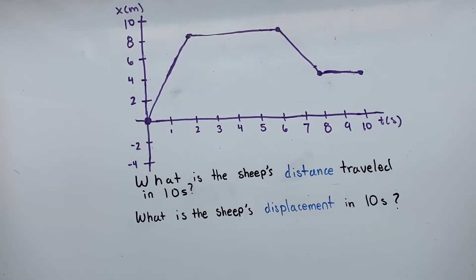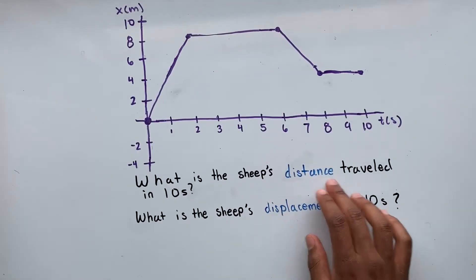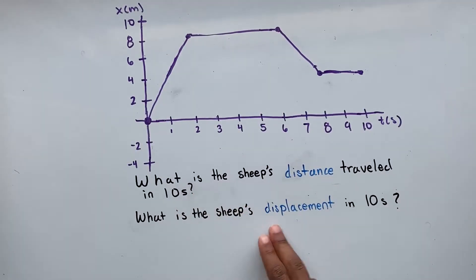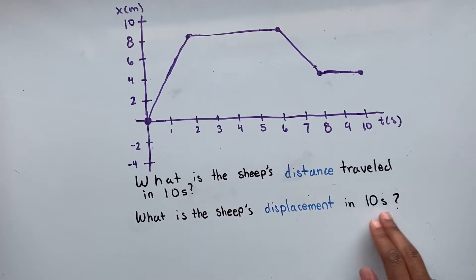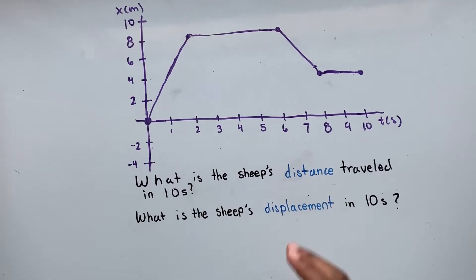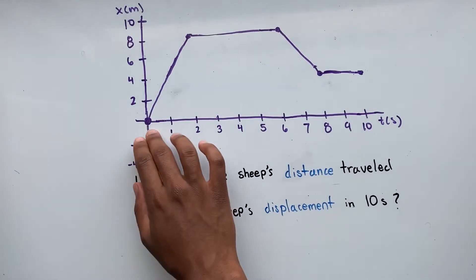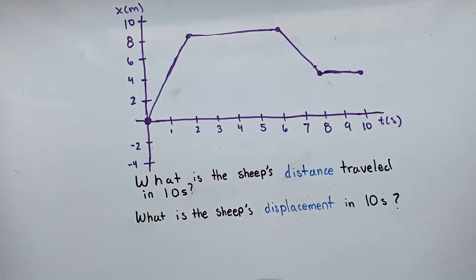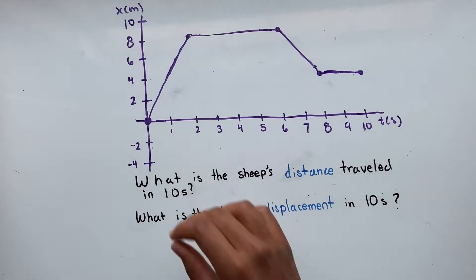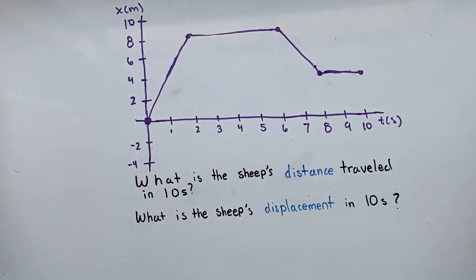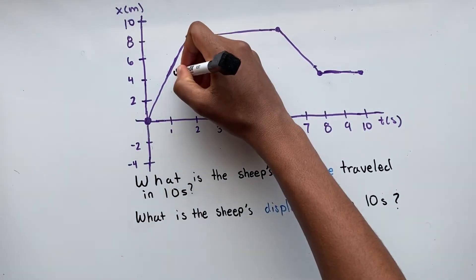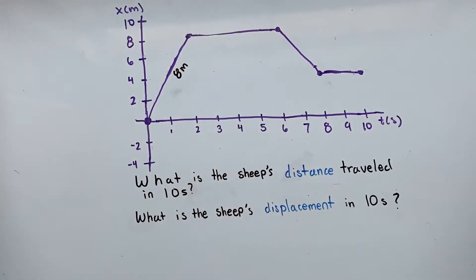Here we have a position-time graph of a sheep, and we're asked what is the sheep's distance traveled in 10 seconds, and what's the sheep's displacement in 10 seconds. Let's solve for our distance first. Remember, distance is defined as the total length an object has traveled. From 0 to 2 seconds, our sheep changed its position from 0 to 8 — that's a total of 8 meters our sheep has traveled.